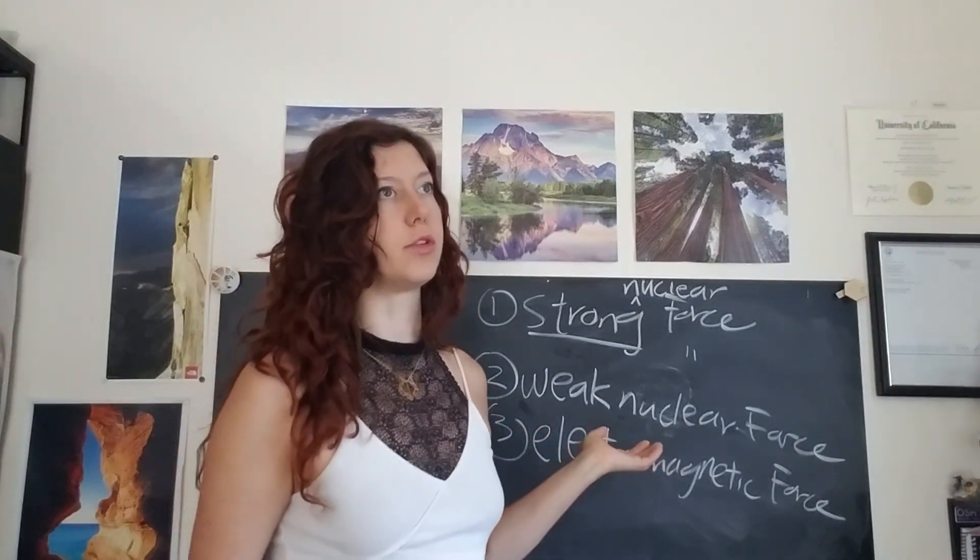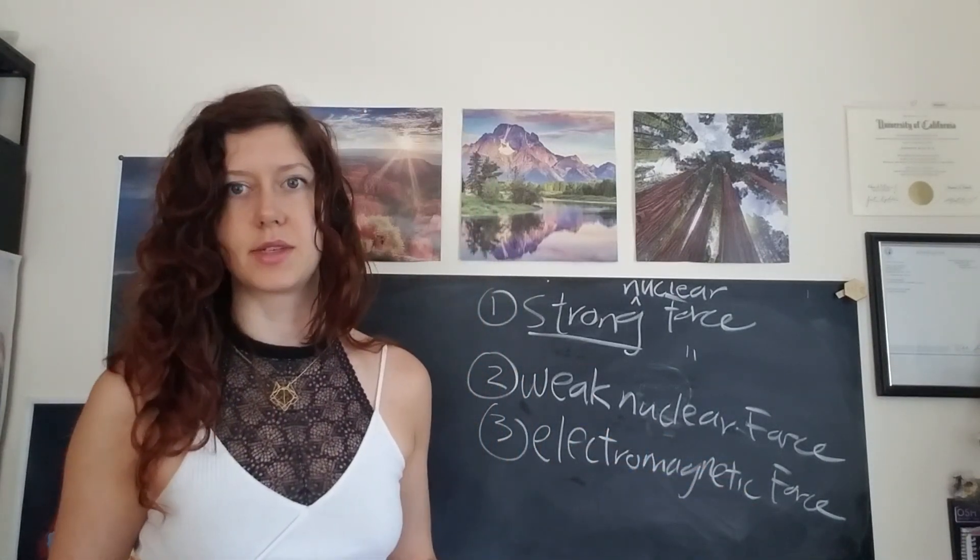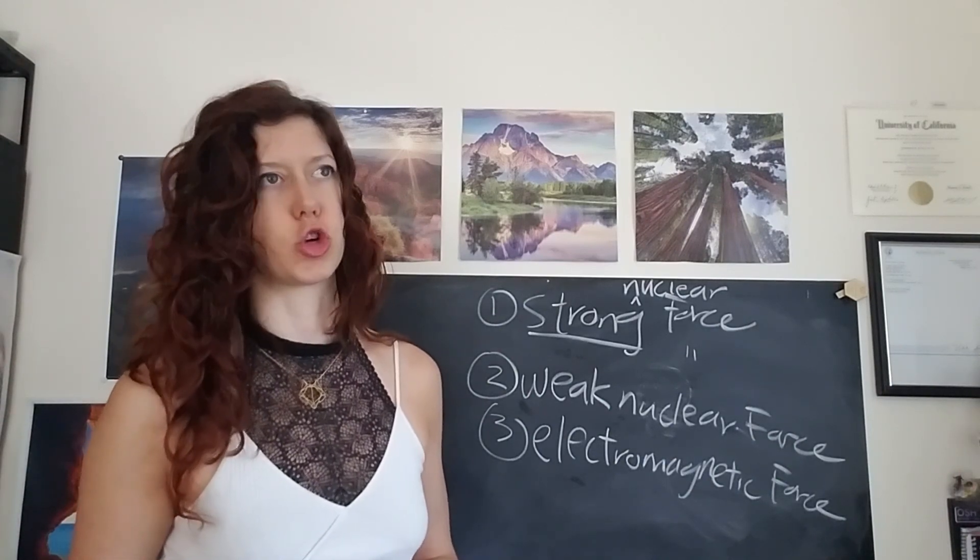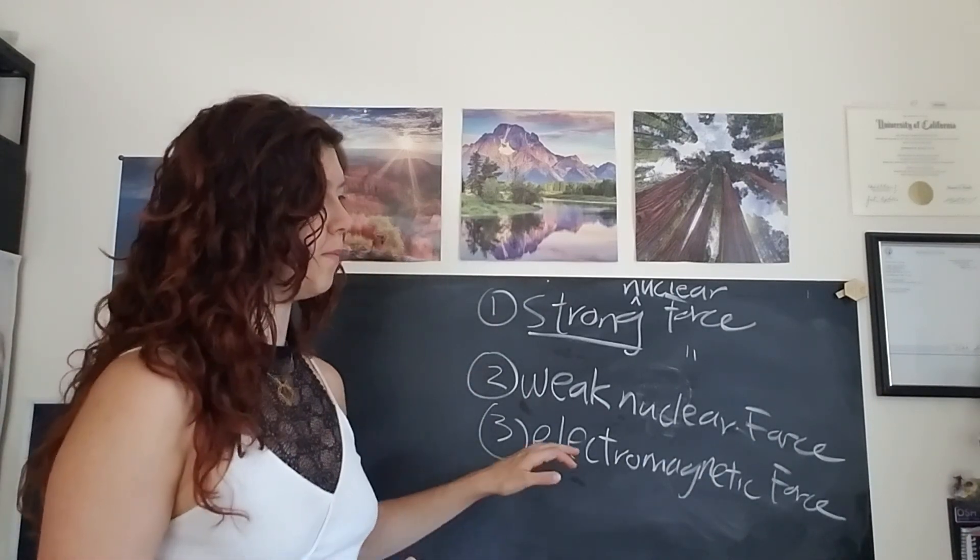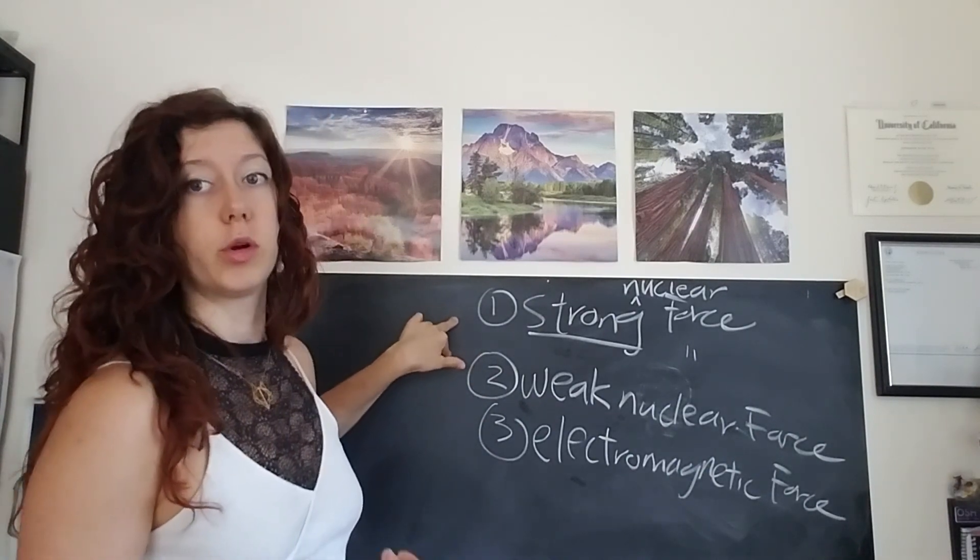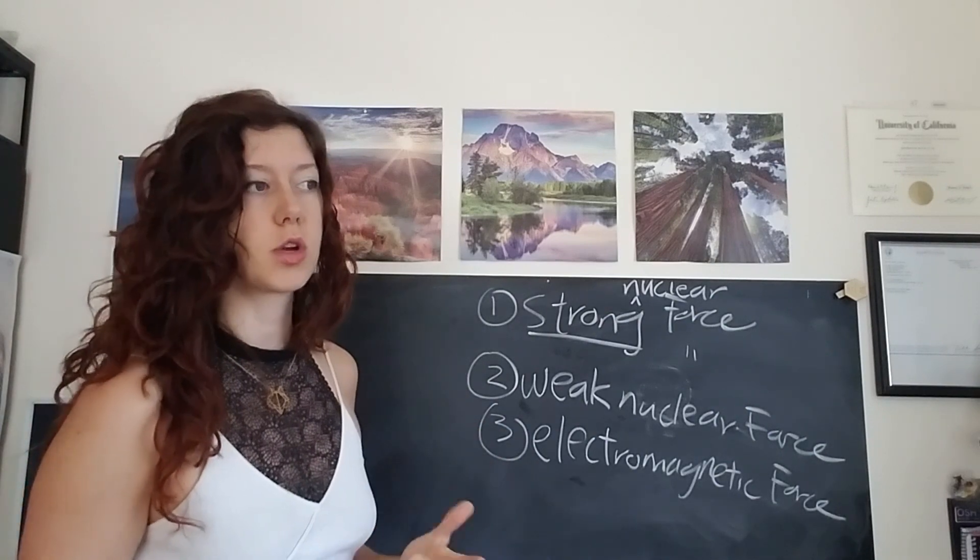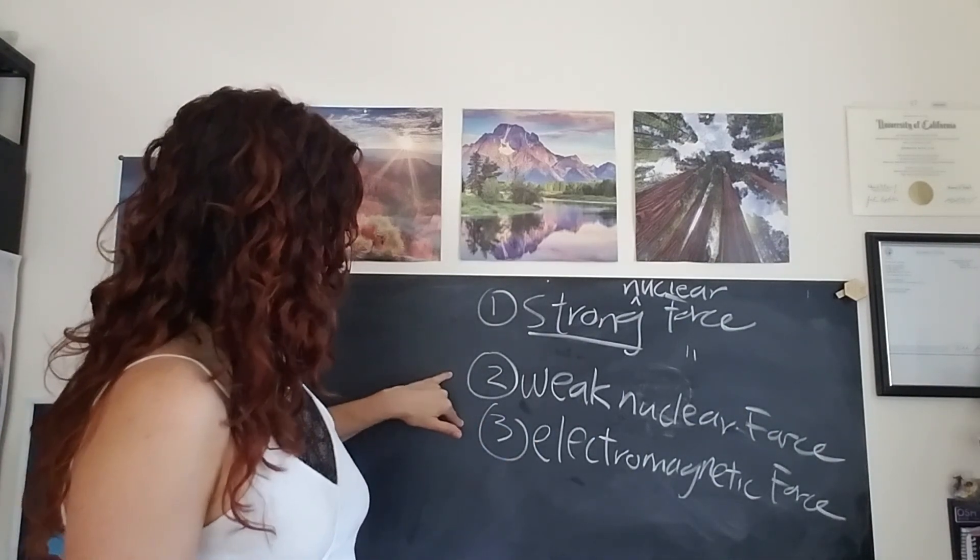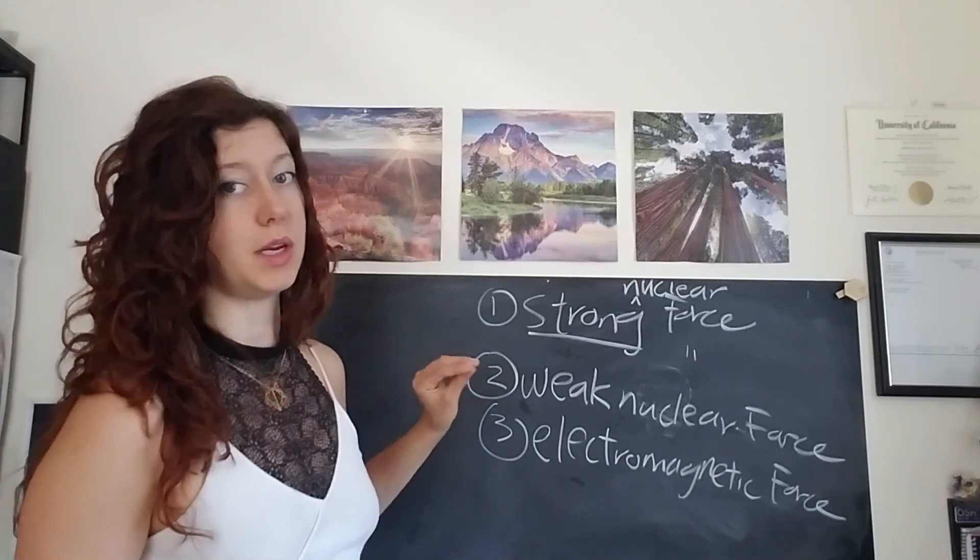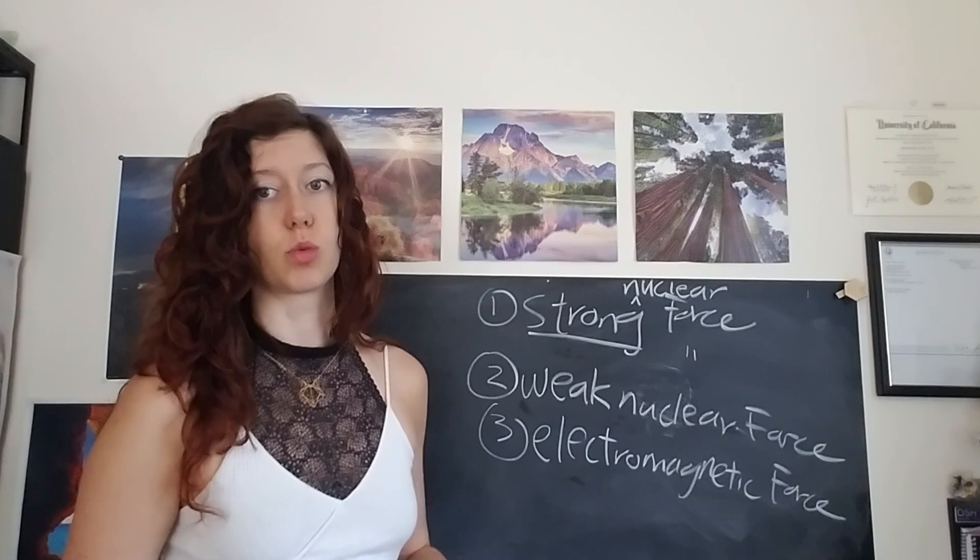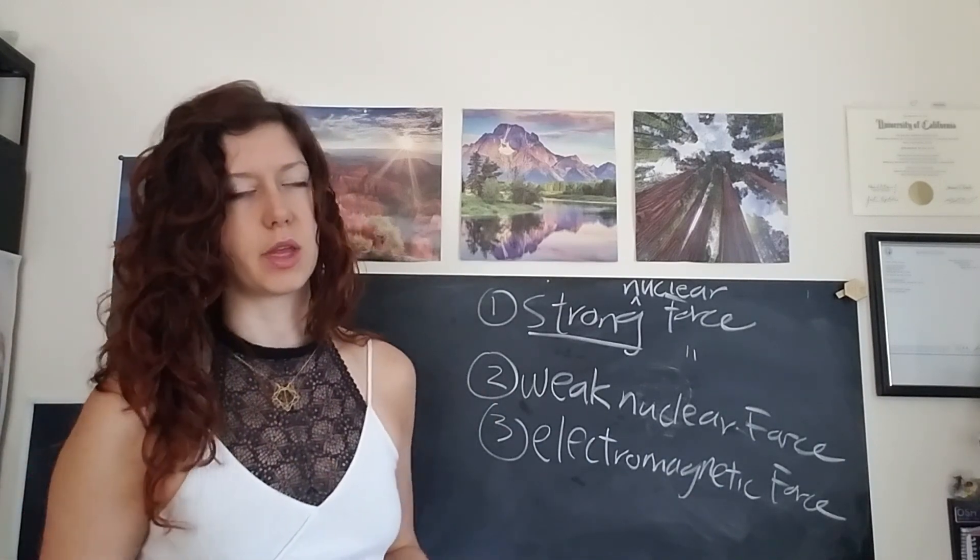And what has happened over the decades, almost a century now at this point, basically, it's been shown that the strong nuclear force and the weak nuclear force are different manifestations of the same thing. And then the tricky piece was showing that the weak nuclear force and the electromagnetic force were different manifestations of the same thing. And this is where the Higgs comes in.